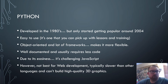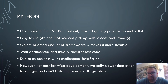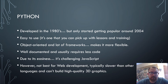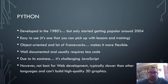Python is a popular programming language used more in elementary, middle, and high schools because it's very simple to use. It was developed in the 1980s but didn't really start getting popular until around 2004. It's very easy to use and one that you can pick up with some lessons and training. It is object-oriented with a lot of framework, making it very flexible. It's well-documented and usually requires a lot less code, though for web development it is typically slower and can't build high-quality 3D graphics.